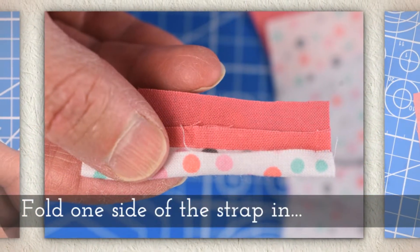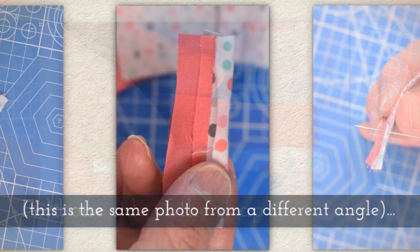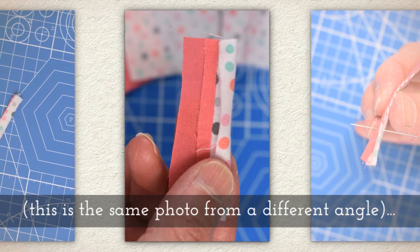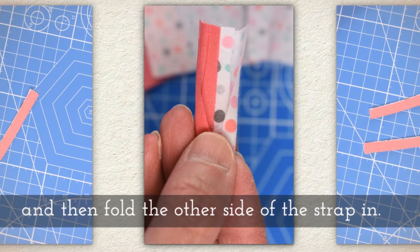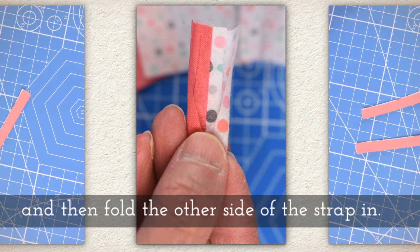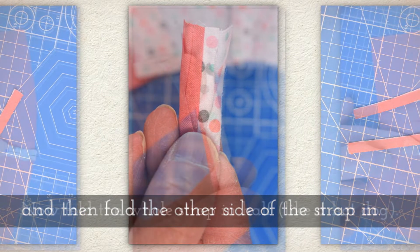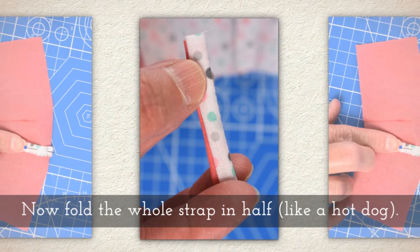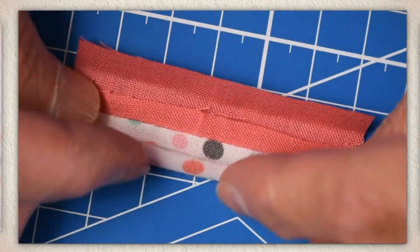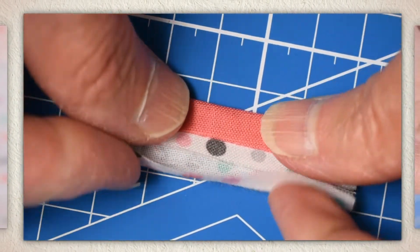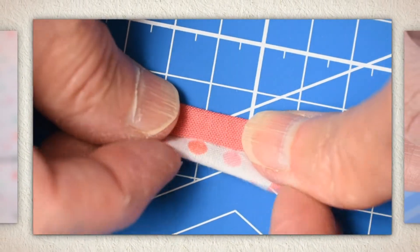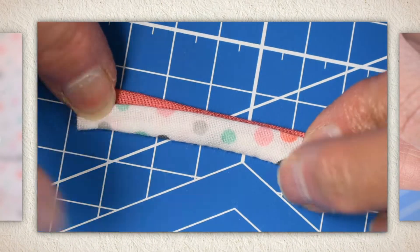Fold one side of the strap in. This is the same photo but from a little different angle to make sure you understand what I mean. And then fold the other side of the strap in as well. Now fold the whole strap in half like a hot dog. So first that strap then the next and then you fold the whole business inside like a hot dog bun.